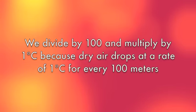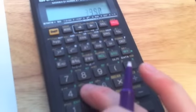We divide by 100 and multiply by 1 because dry air drops at a rate of 1 degree Celsius for every 100 meters.